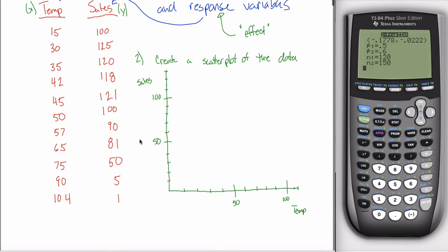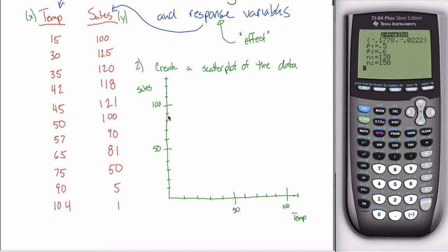And then what I want to do is for each observation, each day, I want to put a dot on my scatter plot that records both the temperature and the sales on that day. So for this first day, when it was 15 degrees and I sold 100 cups, I come over here to 15. If here's 10 and 20, 15 is halfway between them. And I go up here to 100 and I put a dot where the x is 15 and the y is 100.